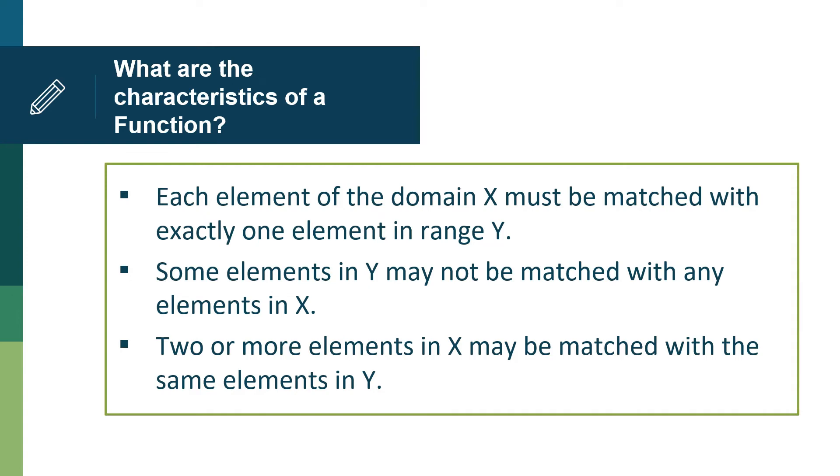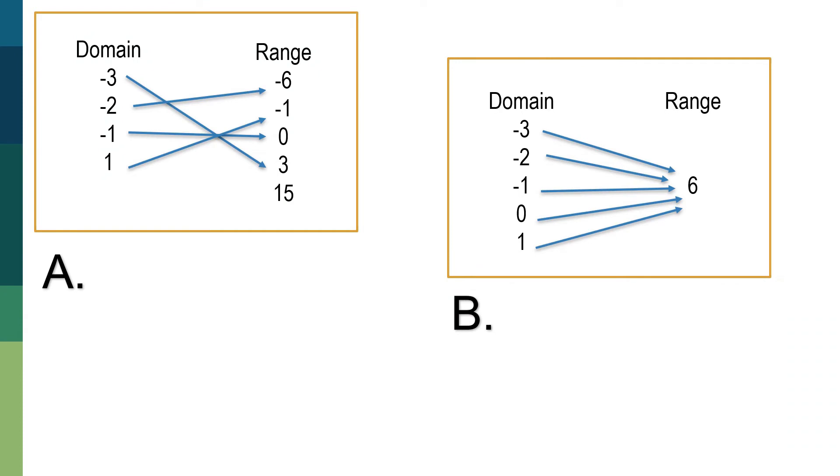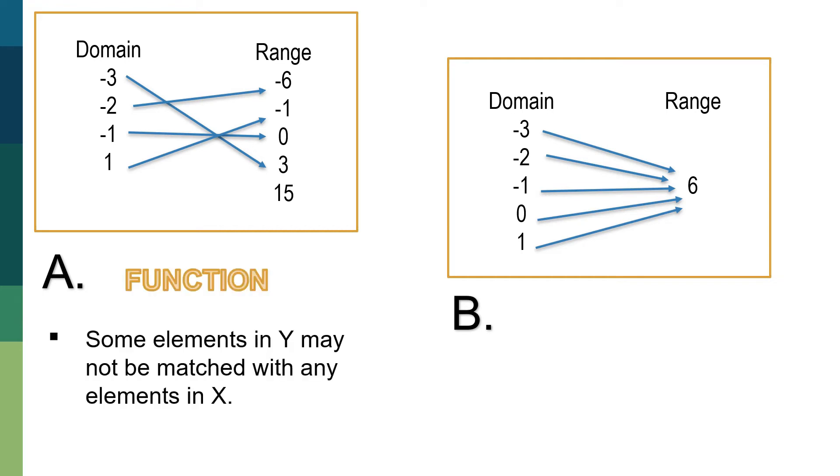So let us look at the two examples here. Given there are their domain and their range. So let us analyze based on the characteristic that was given earlier of a function. So for the first one, as you can see, one of the elements of the range was not matched to any element of the domain. So this exemplifies the second characteristic of a function, which is some elements in Y may not be matched with any elements in X. So we can classify this relation as a function.